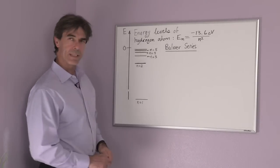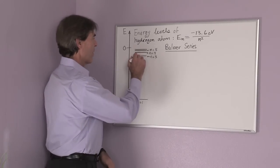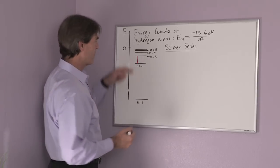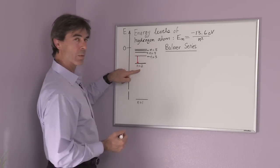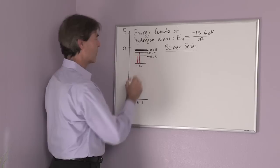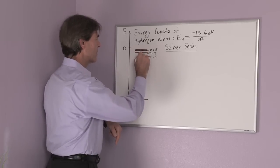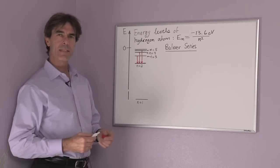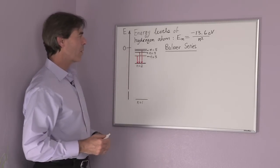The Boehmer series is the series of possible transitions from n equals 3 into n equals 2, or n equals 4 to n equals 2, or n equals 5 to n equals 2. These are the first three transitions in the Boehmer series.